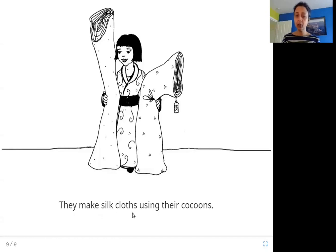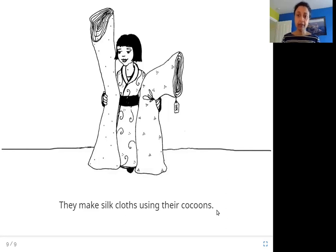They make silk cloths using their cocoons. The cocoon — the protective cover — is made out of silk thread, and you can take that thread and make it into silk cloth. That's what they do to make silk cloth. Thank you.